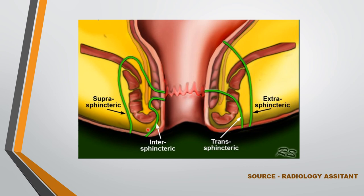When the internal opening is in the anal canal and the tract courses upwards and then downwards without coursing through any sphincters, it is called a suprasphincteric type of perineal fistula. When the internal opening is located above the anal canal — that is in the rectum or above — and the tract traverses downwards without coursing through sphincters and opens into the external opening site, it is called an extrasphincteric type of perineal fistula.